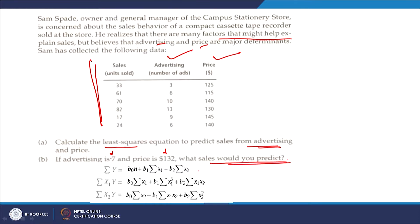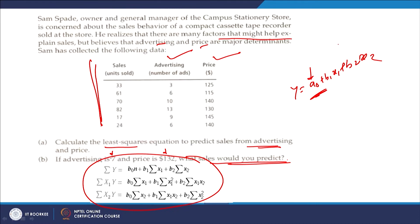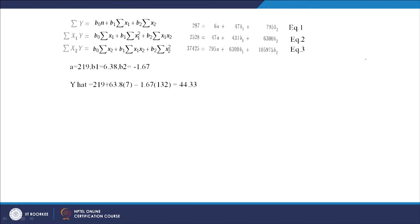If advertising expenditure is $7 and price is $132, what would be the sales? This is a question of the form y = a₀ + b₁x₁ + b₂x₂, giving three unknowns and three equations. Solving these equations, a₀ = 219. Note: b₁ is the coefficient of the first independent variable and b₂ is the coefficient of the second (price) — not intercepts except for a₀.